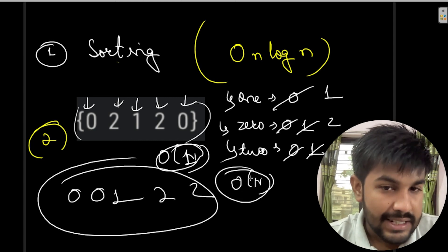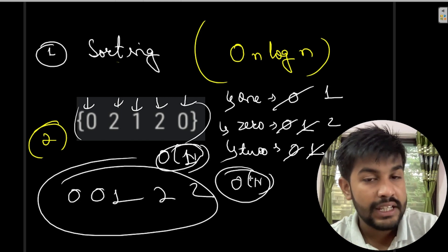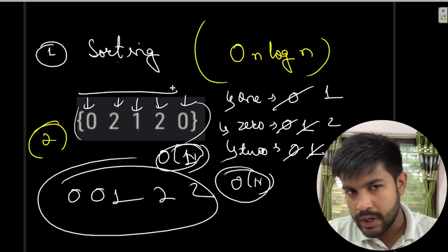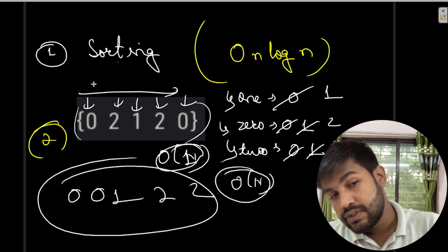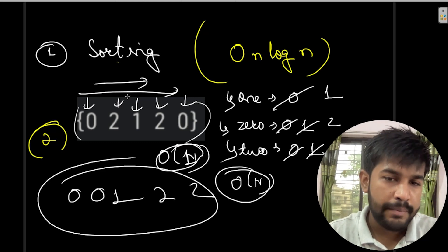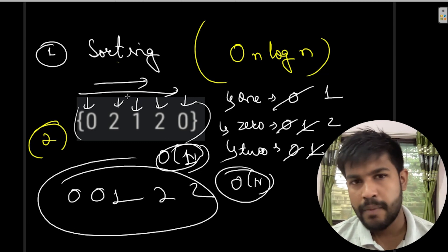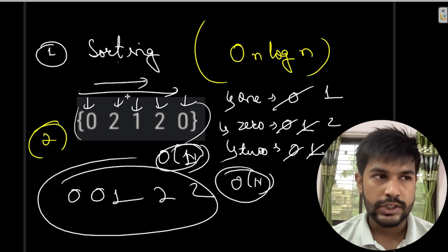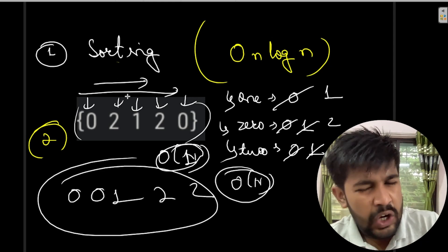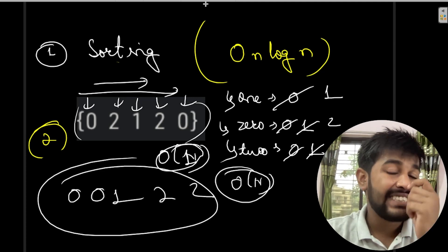A better algorithm in terms of traversals does exist: you can do this in one traversal instead of two. The next algorithm is not an intuitive one, so if you come from a background of competitive programming or are learning now, don't get demotivated if you didn't know this. This algorithm is called the Dutch National Flag algorithm.